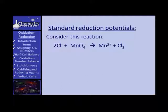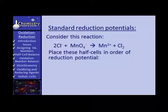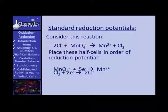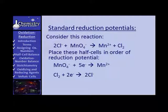Consider this reaction: chloride ion reacting with permanganate giving us the manganese ion and chlorine. The two half cells are: chlorine plus two electrons giving chloride ion, and permanganate plus five electrons giving the manganese ion. Which one has the greater reduction potential? Permanganate plus five electrons — the permanganate gains five electrons more easily than the chlorine gains two electrons. That's how we get their positions in the table.